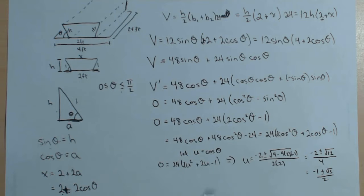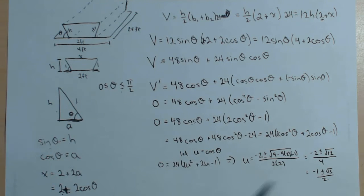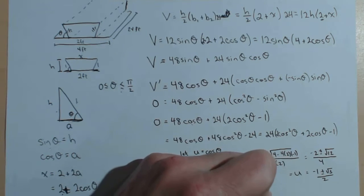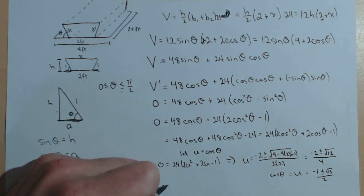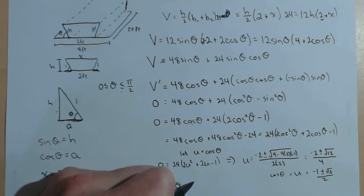All right. One of these is positive and one of these is negative. Well, we know we want to be in the first quadrant. And we're dealing with, this is a value for cosine, because this is u, which is equal to cosine of theta. So, we're only going to need to solve cosine of theta equal to the positive value, which is with the plus. So, cosine of theta equals negative 1 plus square root of 3 over 2.